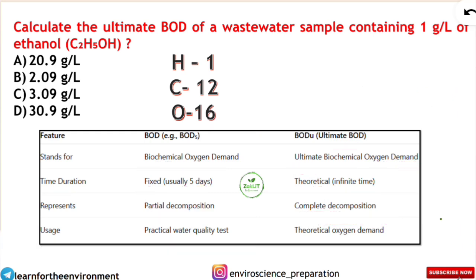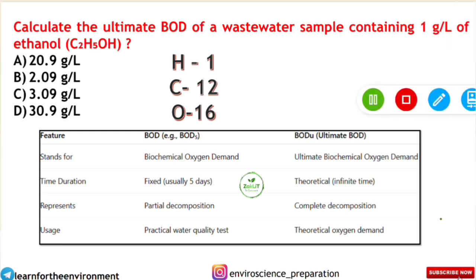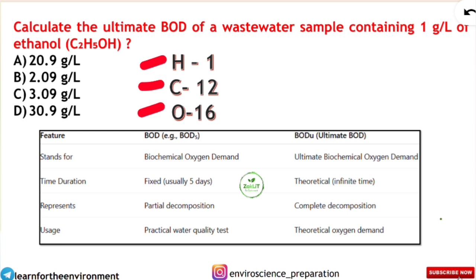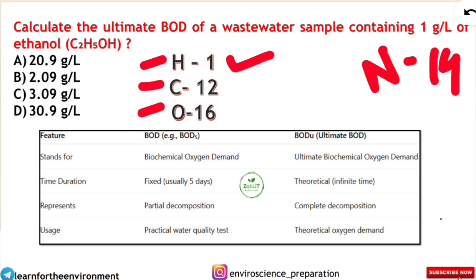Here is your homework question — comment the answer in the comment section: calculate the ultimate BOD of a wastewater sample containing 1 gram per liter of ethanol. The ethanol formula is C2H5OH, and options are provided on screen. When calculating ultimate BOD, the compound will usually contain carbon, hydrogen, and oxygen. Remember: atomic weight of carbon = 12, hydrogen = 1, oxygen = 16, and nitrogen = 14 (rarely needed). With these values you can solve any ultimate BOD question.